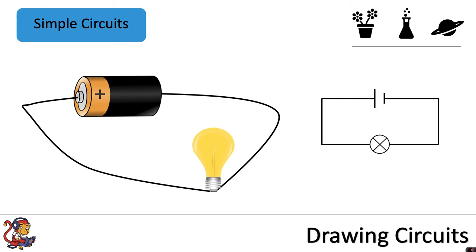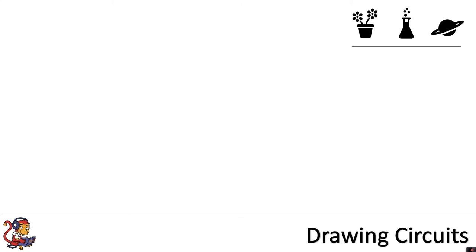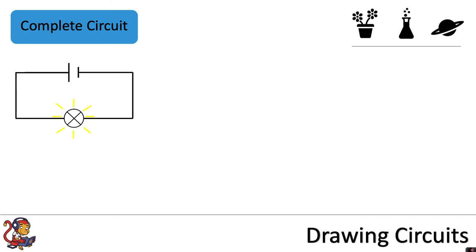For any circuit to work, the circuit has to be complete. You can see in this complete circuit that all the wires are connected properly to their components and therefore the lamp lights up.